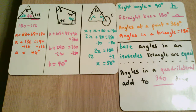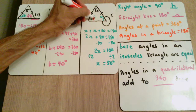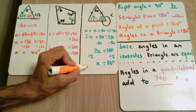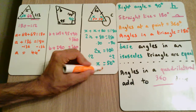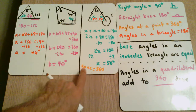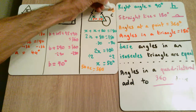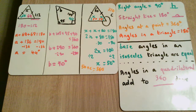Now we've found x equal to 50, we need the value of c. This angle is 50 and this angle is 50. We know that angles at a point add to 360, so we can say 50 plus the value of c equals 360. Taking 50 away from 360 gives c equal to 310 degrees. Once again, just using our key angle facts to work out these different questions.